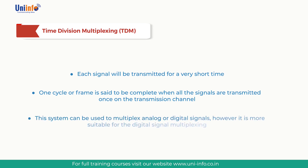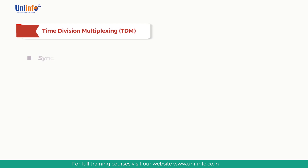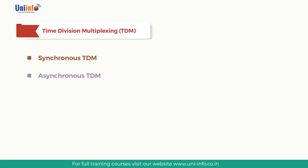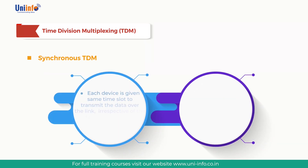TDM can be used to multiplex analog or digital signals; however, it is more suitable for digital signal multiplexing. There are two types of TDM: Synchronous TDM and Asynchronous TDM. In Synchronous TDM, each device is given the same time slot to transmit data over the link, irrespective of whether the device has any data to transmit or not — hence the name Synchronous TDM.